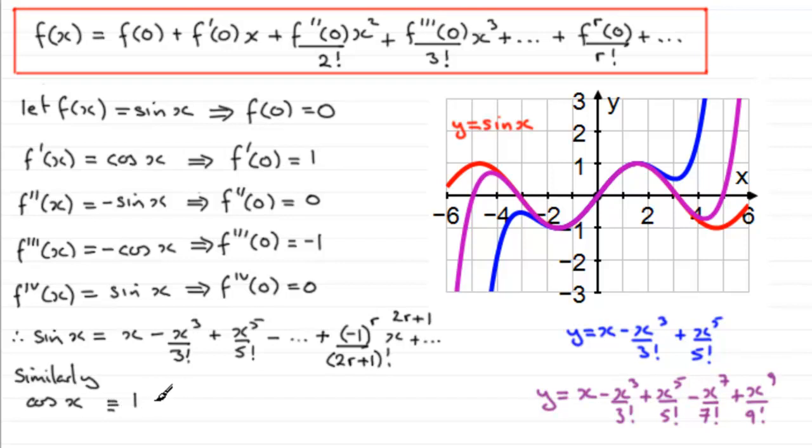Then the next term was minus x squared over 2 factorial, and then you've got plus x to the power 4 over 4 factorial.